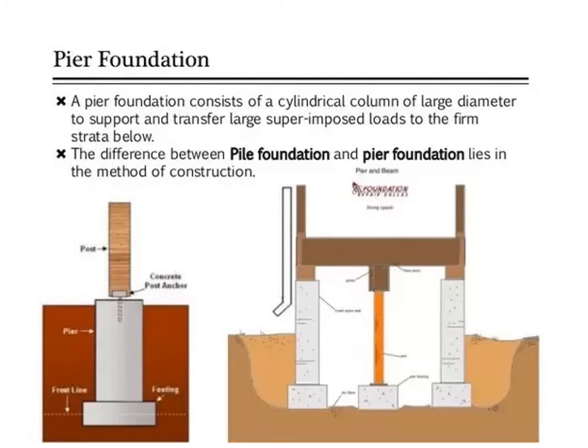Out of the different types of deep foundation, we have seen pile foundation. Next is pier foundation. A pier foundation consists of a cylindrical column of large diameter to support and transfer large superimposed loads to the firm strata below. The difference between pile foundation and pier foundation lies in the method of construction.